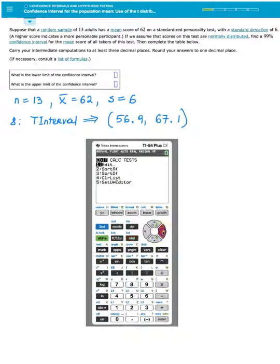I enter Stat, go to Tests, and choose option 8, T-interval. I don't deal with data this time. I have stats. So choose that option and enter your sample mean of 62. As you can see, my calculator still remembers information from previous examples. So I enter 62 for x-bar, 6 for standard deviation, sample size 13, confidence level 0.99, press enter, you got your interval. That's all you need to do. Round to one decimal place, and we get 56.9 to 67.1. We can conclude that we are 99% confident that the mean score of all takers of this test is between 56.9 and 67.1 points.